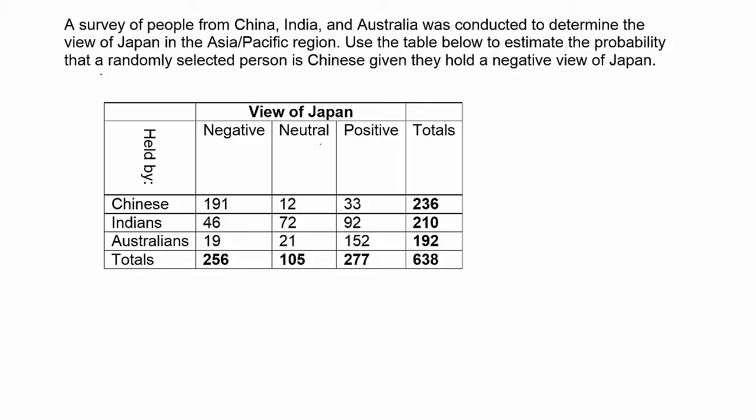A survey of people from China, India, and Australia was conducted to determine the view of Japan in the Asia-Pacific region. Use the table below to estimate the probability that a randomly selected person is Chinese, given they hold a negative view of Japan.